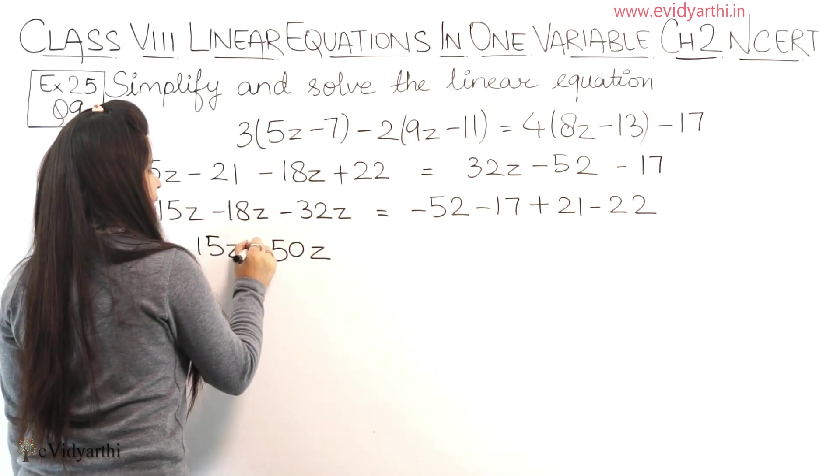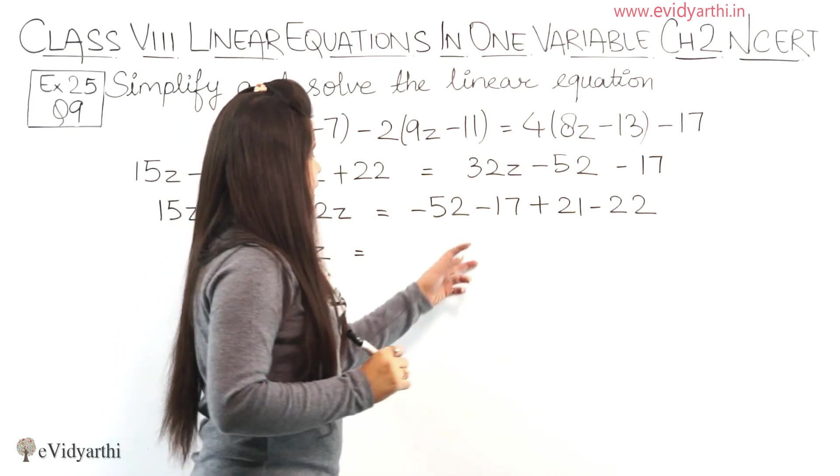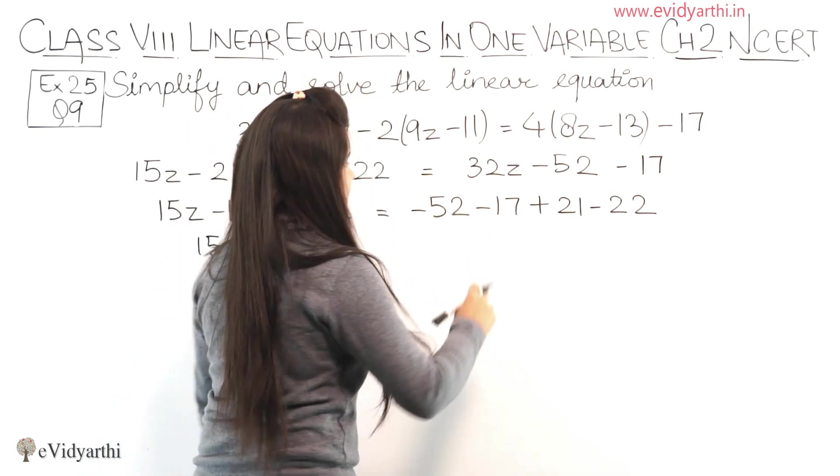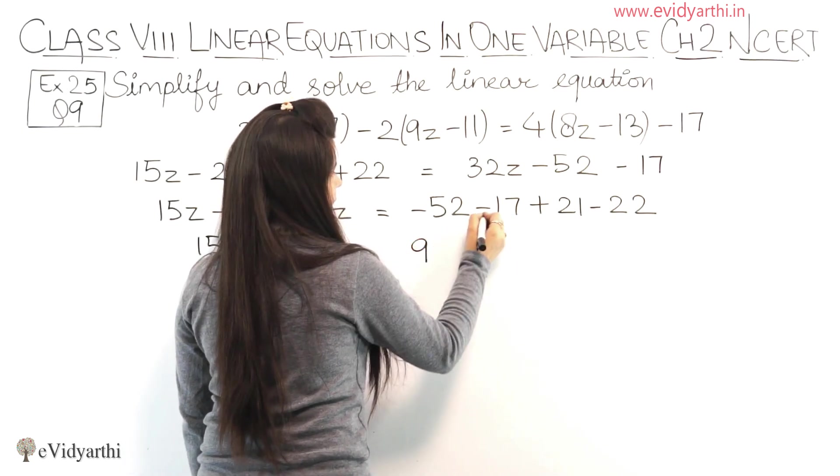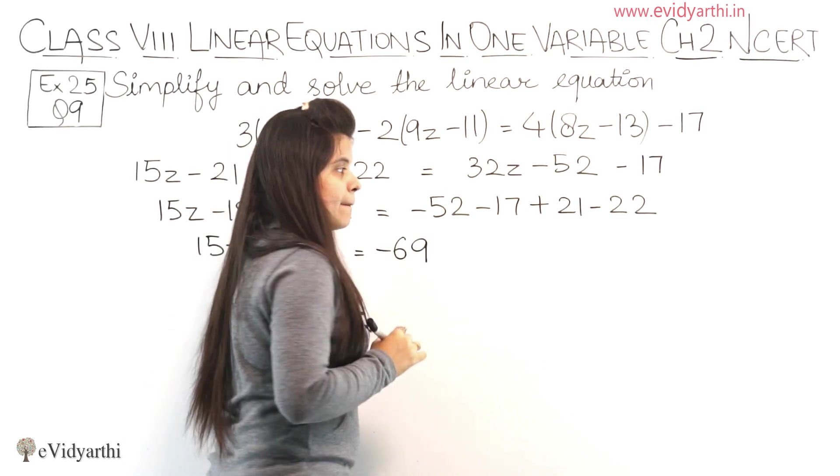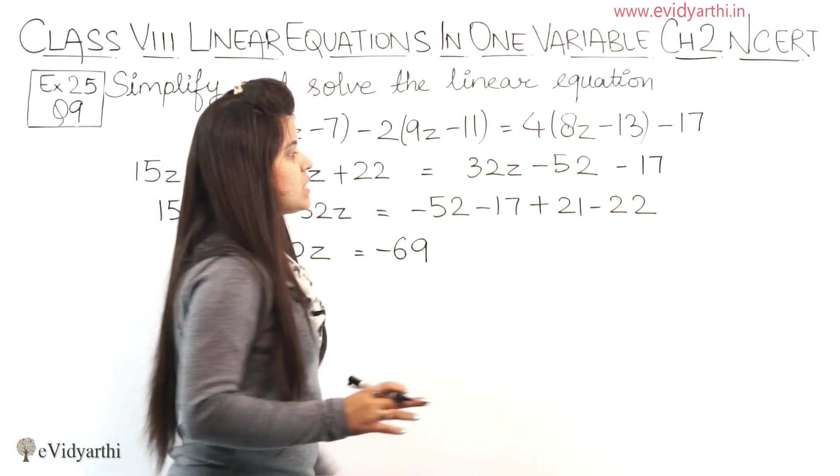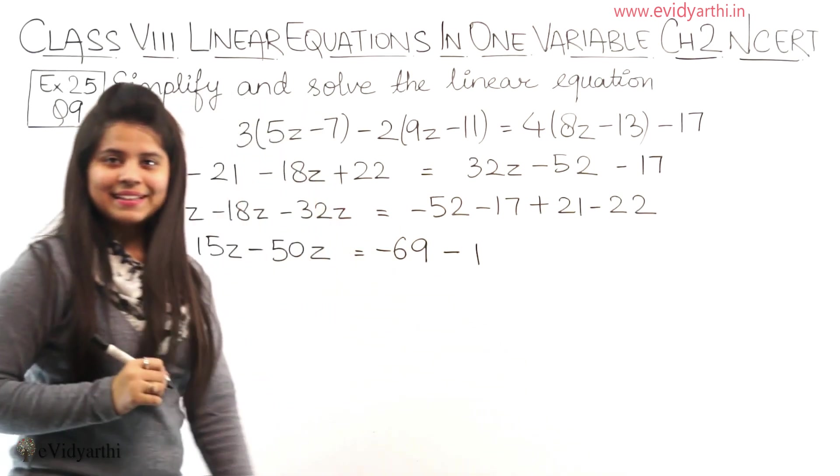And the sign for both is minus, so minus comes. Equals to, here we have minus minus which becomes plus. Adding these we get 52 plus 17 is 69, and the sign is minus. Then plus minus becomes minus, 22 minus 21 is 1, and the sign is minus.